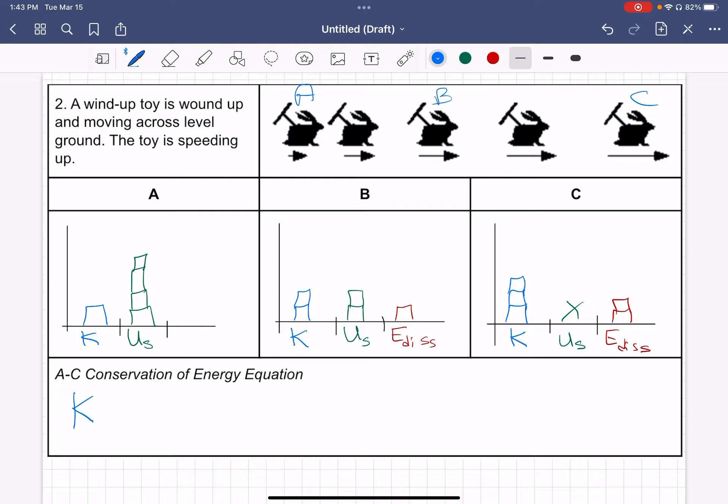So then the last step is to do this conservation of energy equation. And here it says A to C. So that means I'm going to use A and C as my two snapshots. What I'm writing out is that the total of all of the energy present at A has to equal the total of all of the energy present at C.